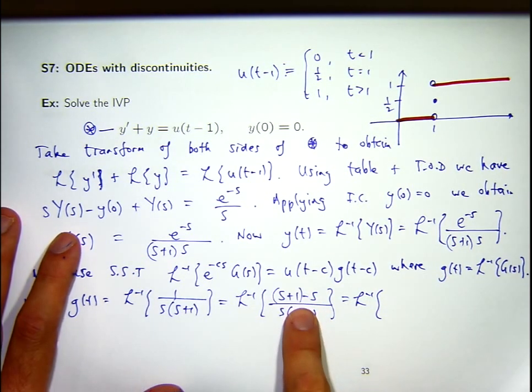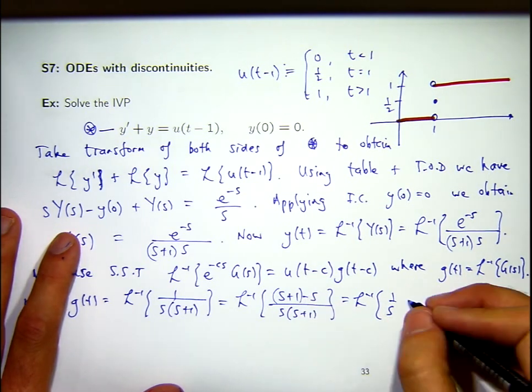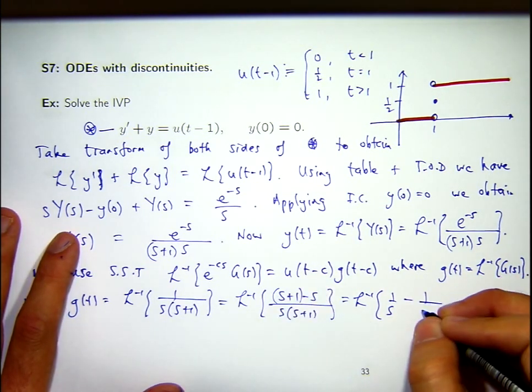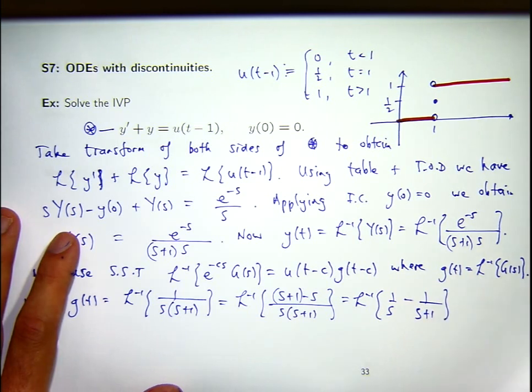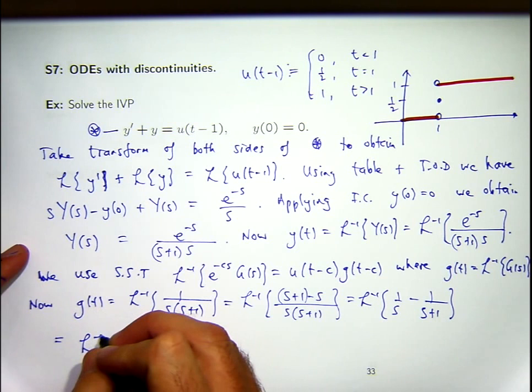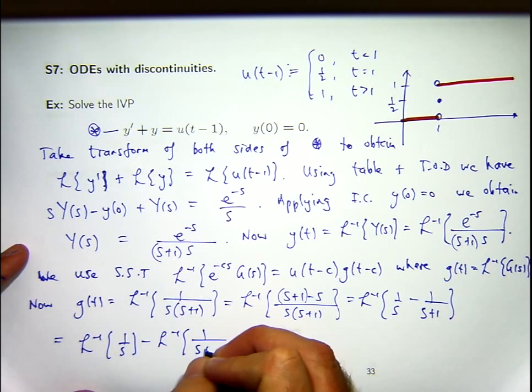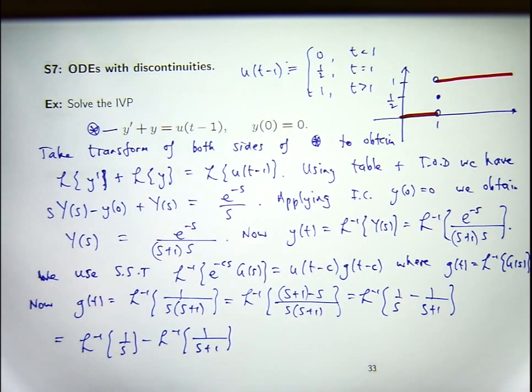If I bracket it like that, and I break this up into two things, I'll get the following. Well in the first, this is going to cancel with this, so I'll get 1 on S, and in the second, I have a minus sign, that's going to cancel with that, so I'll get 1 on S plus 1. So the inverse transform is also a linear operator, so I can break that up into two bits.